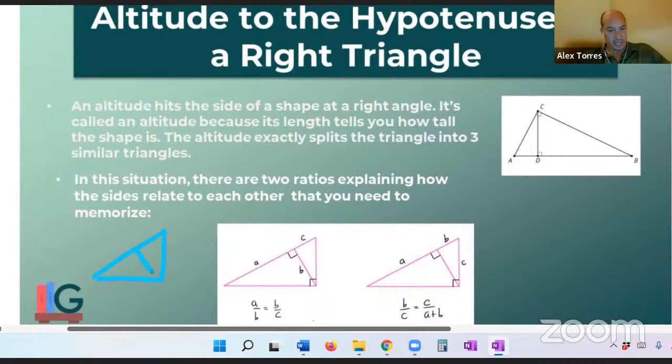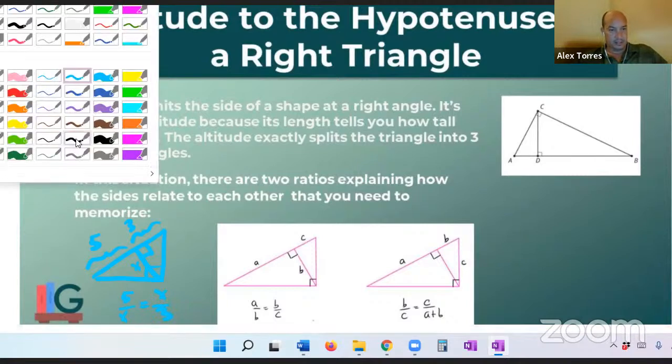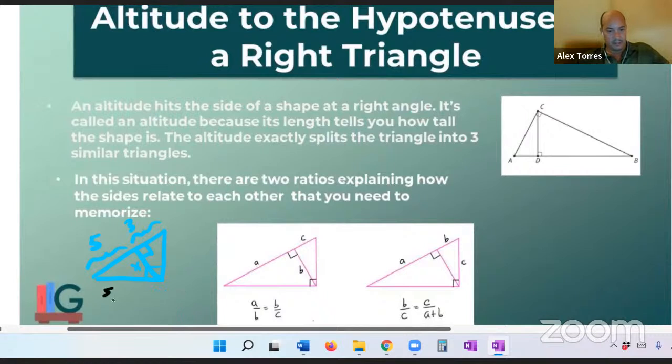So, for instance, if we had a right triangle with an altitude, and so I've got my right angle symbols, and if we already knew that this length right here was 5 and this length right here was 3, and we were trying to find the length of the altitude, using that same ratio, it would be 5 over X equals X over 3. And you can cross multiply that, and you'd get X squared equals 15, square root of both sides, and X would be equal to the square root of 15. So that's how that ratio gets set up.